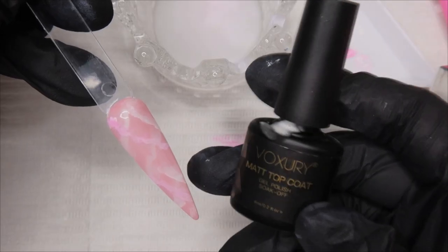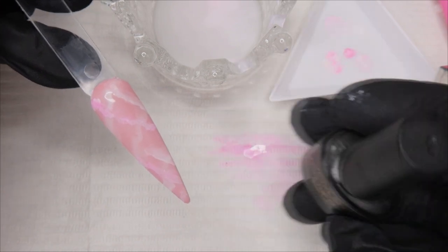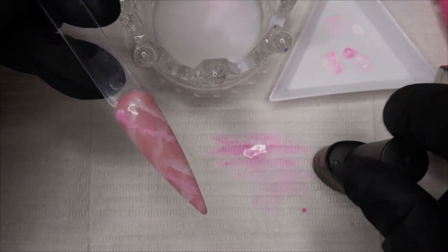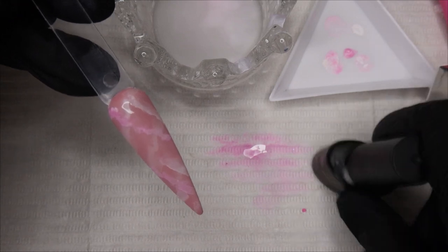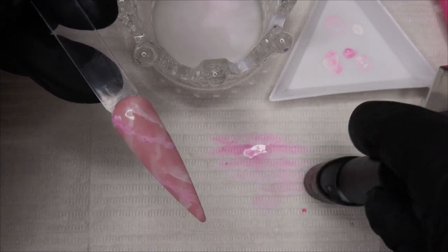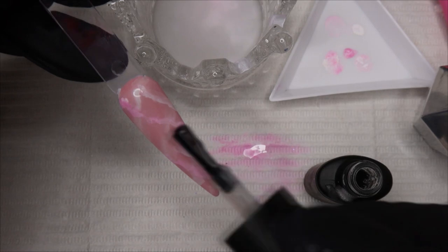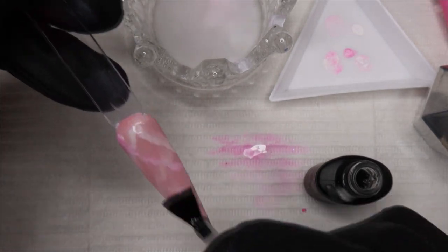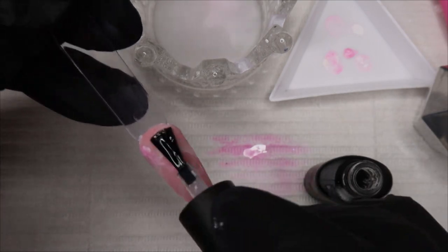I'm going to apply some matte top coat to this one because I do want to see how it looks. With some of the rose quartz crystals they're not polished, so they have the matte finish to it. I want to see how it looks on a nail. If it doesn't look good I'll just put shiny top coat back over it. This is how it's looking with the matte top coat.